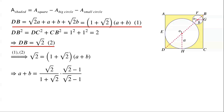We multiply the expression by (root 2 minus 1) over (root 2 minus 1). The denominator, (1 plus root 2)(root 2 minus 1), equals 2 minus 1, which is 1. The numerator, root 2 times (root 2 minus 1), equals 2 minus root 2. So we have A plus B equals 2 minus root 2.